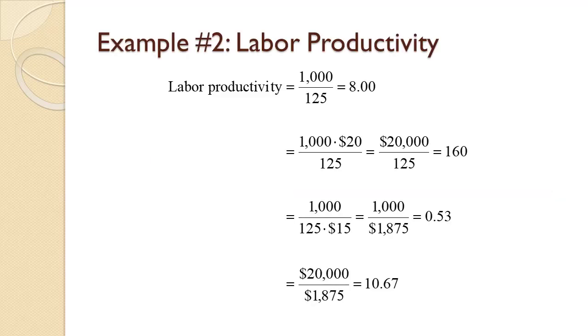Labor productivity is a single factor productivity number, so we can use either units or dollars in the calculations. Generally, you would only calculate the value one way using whichever method was requested by your textbook. However, for completeness, we will compute it all four possible ways. Using units for both output and labor, we have 1,000 divided by 125, so each hour of labor yields 8 units of output.